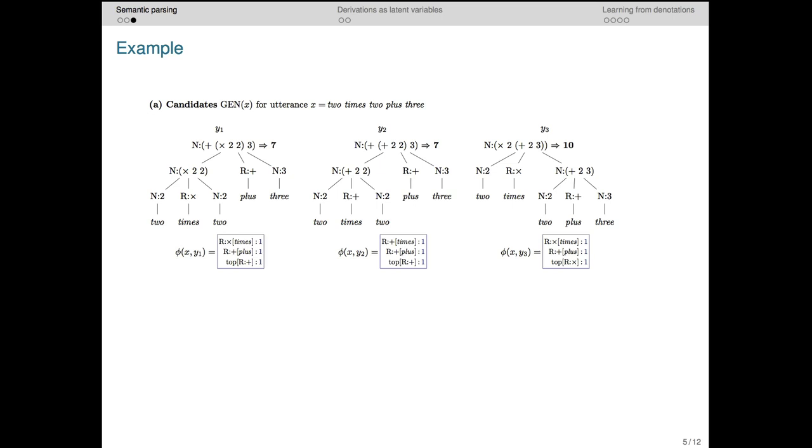The featurization of these trees turns them into weight vectors phi. Here we just show the values that are non-zero. For example, a feature like this one fires if the logical form symbol for multiplication is paired with the word times. So we have a bunch of lexical features like this.